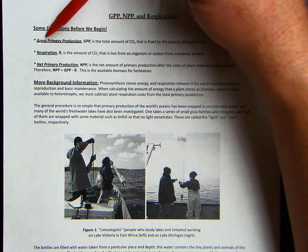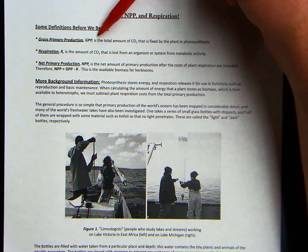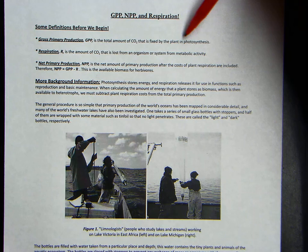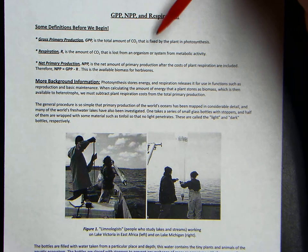Okay, so like we talked about in lecture, the gross primary productivity, or the GPP, is the total amount of CO2 that's fixed by the plant in photosynthesis. Basically by doing photosynthesis, they're taking CO2 and they're making glucose.